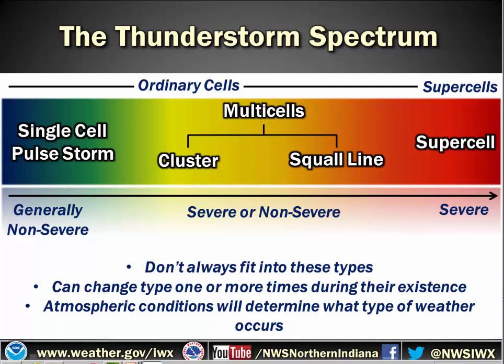On the first slide here we have the single cell pulse storm — that's your general garden variety non-severe thunderstorm in most cases. Then you go into more severe or non-severe, depending on the environment, with multi-cell storms. And on the farther end of the spectrum, you get into supercells, which are the more significant storms responsible for our largest tornadoes. Keep in mind that storms don't always fit into these types — they can change one or more times during their existence and evolve as they go along.